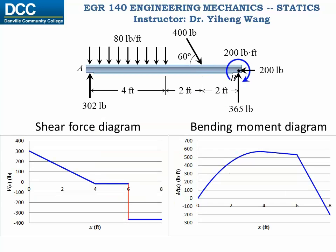If you know the functions, of course you will be able to graph them — you've probably learned this in pre-calculus class. These are the two graphs made using Microsoft Excel — the shear force diagram and the bending moment diagram. From these two diagrams, you can easily visualize how shear force and bending moment change with location along the member, where they change direction from positive to negative or vice versa, and most importantly, where the absolute maximum shear force and bending moment occur. And those are important pieces of information used in the design of a structure.